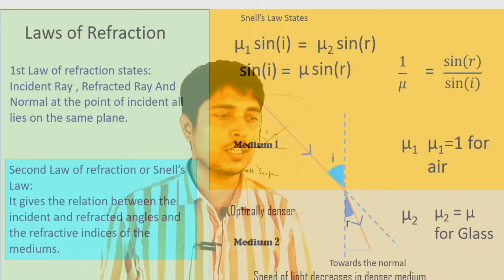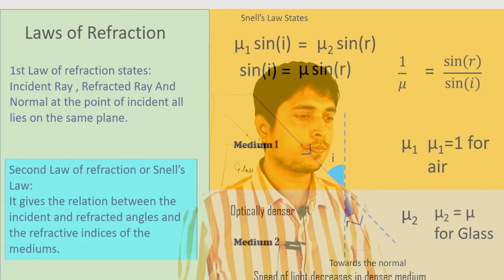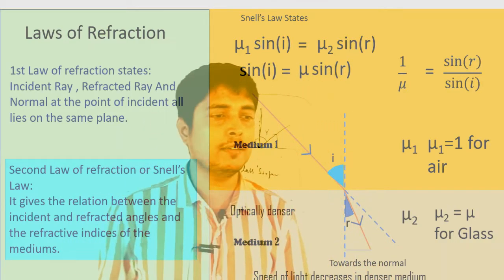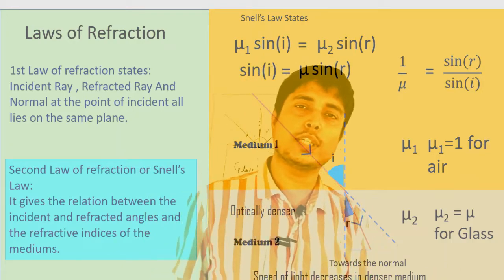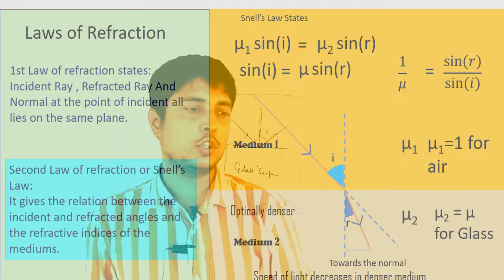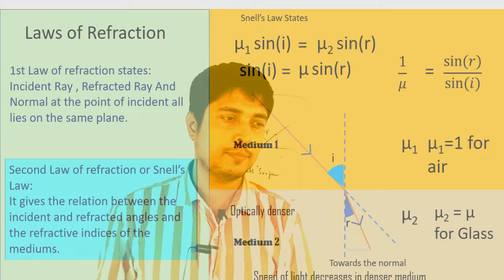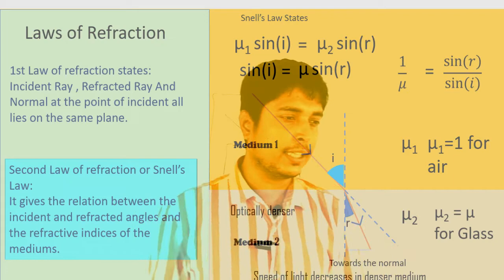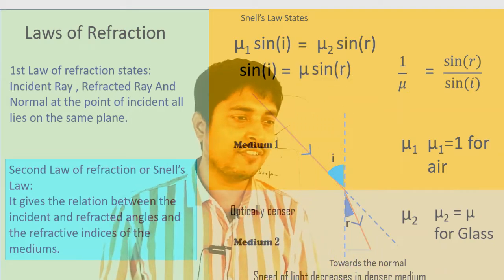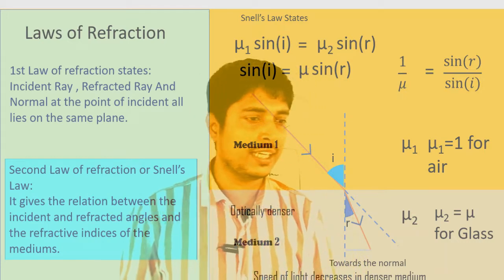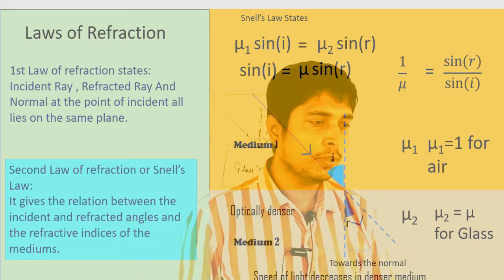The refractive index of a medium is the extent to which the medium increases or decreases the speed of light. The more the refractive index, the more the refractive effect. This is what we call the refractive index of medium 2 with respect to medium 1.